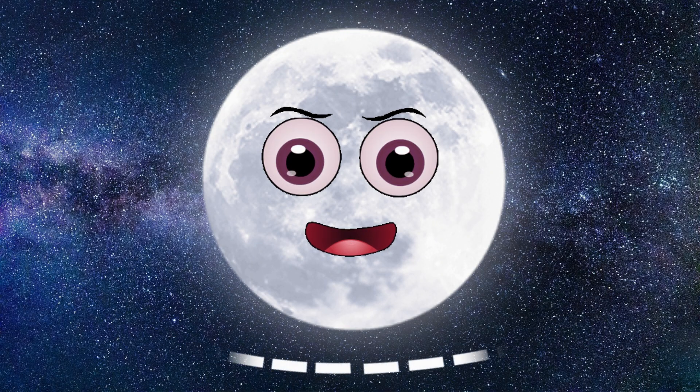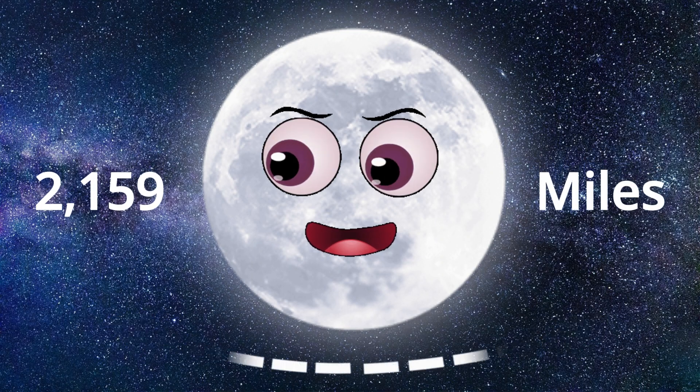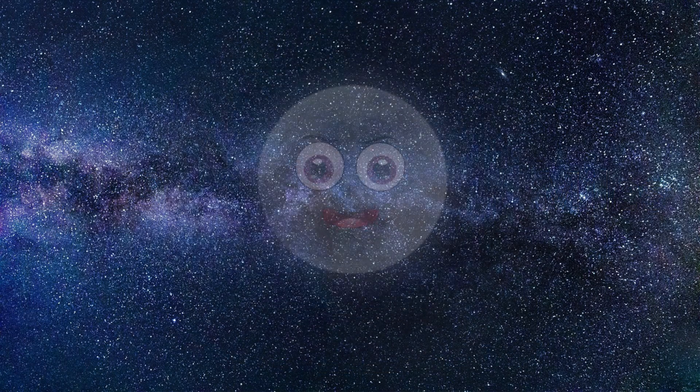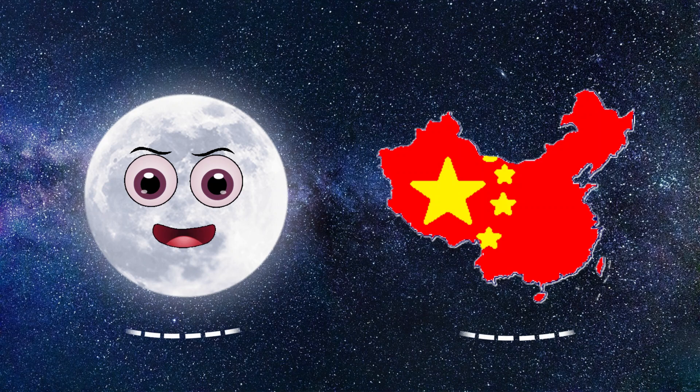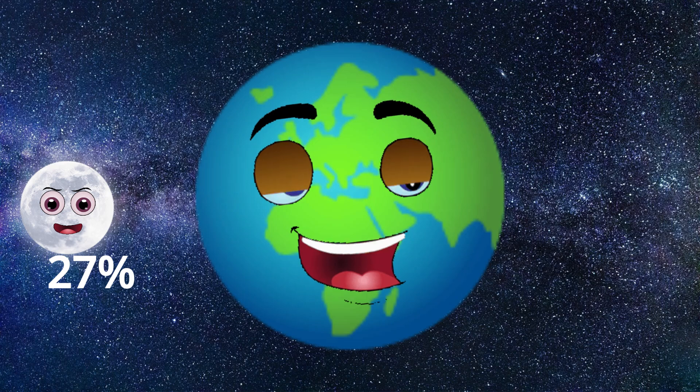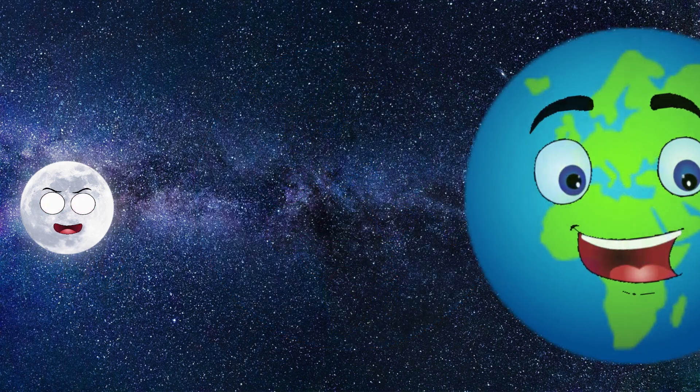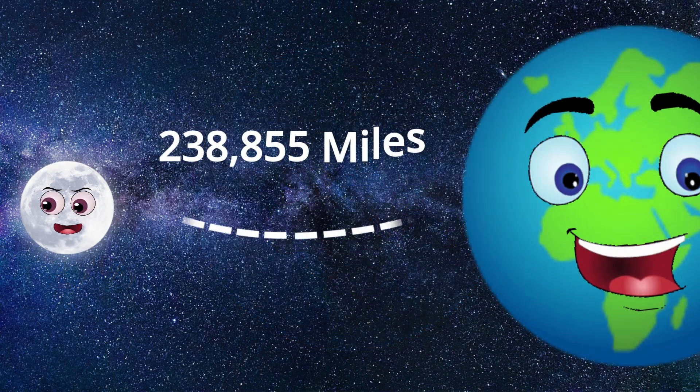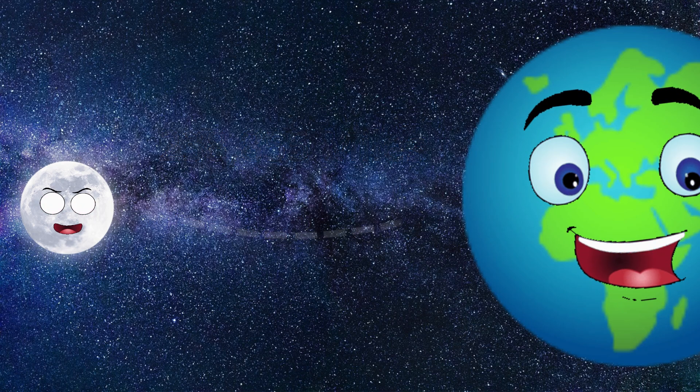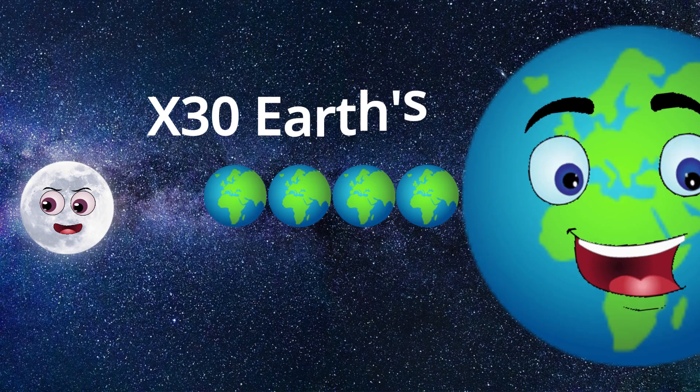The size of our moon is approximately 2,159 miles across, making its diameter slightly smaller than the width of China, or 27% the size of Earth. Our moon is also 238,855 miles away. That's roughly 30 Earths away.